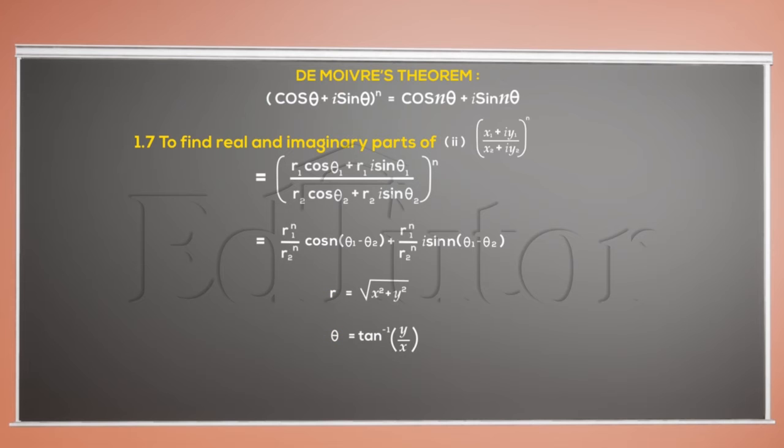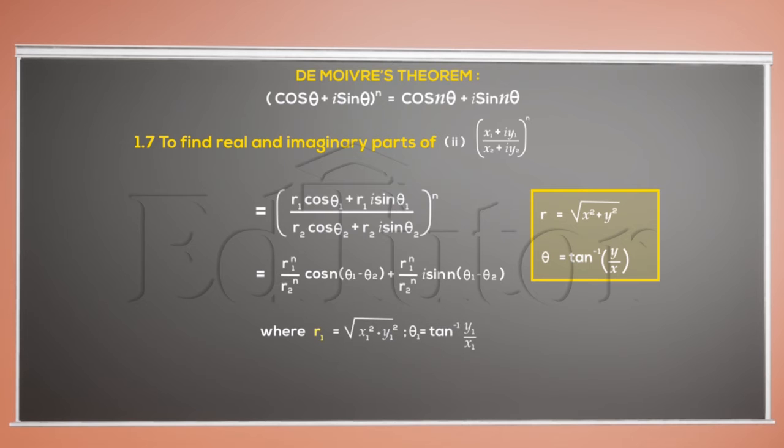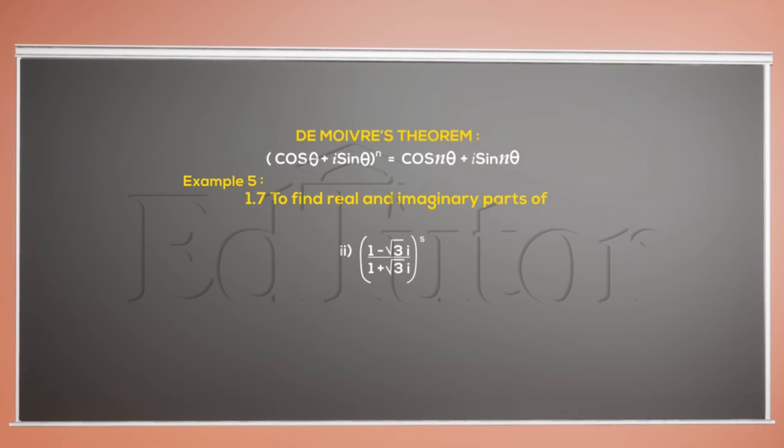I mean, you must have remembered the formula we derived previously, right? So, R1 and theta 1 becomes this. Whereas, R2 and theta 2 becomes this. Got it, my friends?